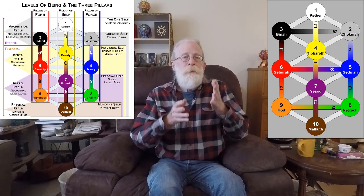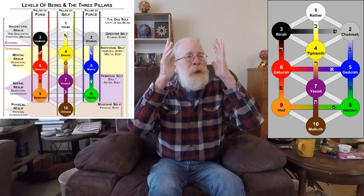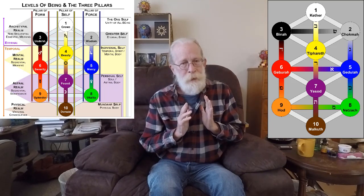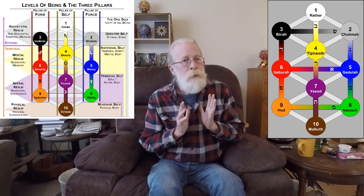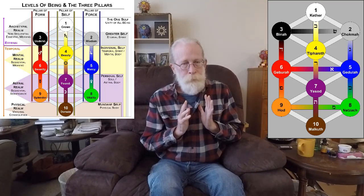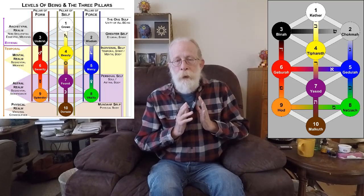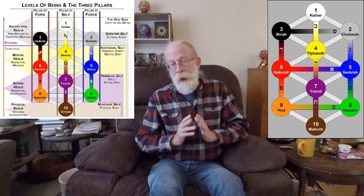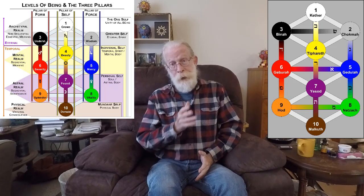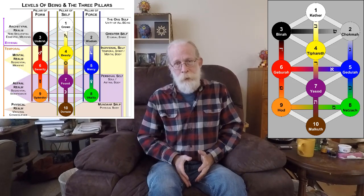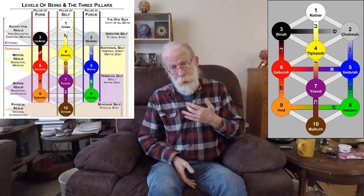This is between Kether, the one self, and Tiferet, the solitary self. That little reflection of the I. Then, the connection between the solitary self and the sentient self, between the mental body and the astral body. So, supernal body, mental body, astral body.